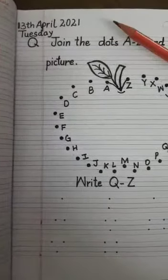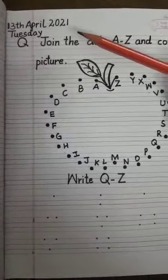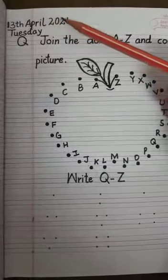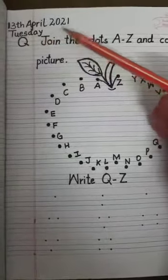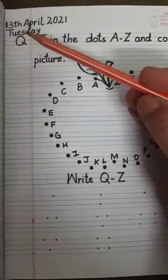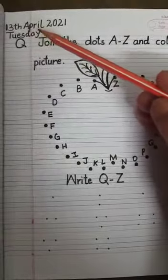Good morning warriors. How are you today? Today is 13th of April 2021 and the day is Tuesday. T-U-E-S-D-A-Y Tuesday.